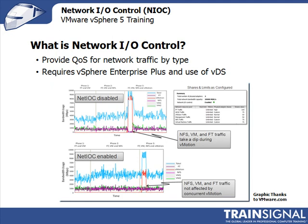For example, if you have a vMotion occurring, or multiple vMotions, that could actually slow down your virtual machine traffic. You don't want end user applications slowed down by a vMotion occurring or fault tolerance traffic. So what you're able to do with Network I.O. Control is essentially throttle these different types of traffic and ensure that the highest priority traffic — primarily your applications and storage traffic — gets the most bandwidth it deserves.